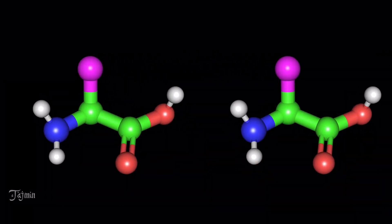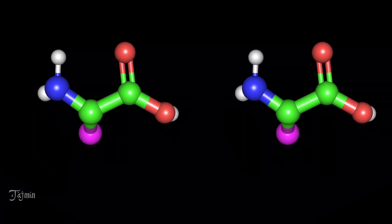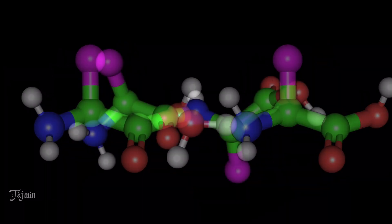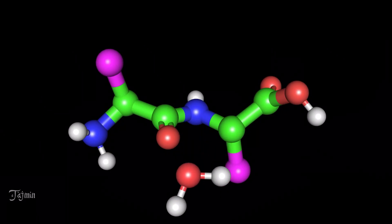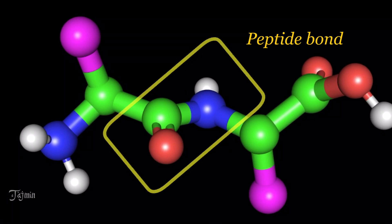The carboxyl group of one amino acid forms a strong covalent bond with the amino group of the second amino acid by leaving a water molecule. This bond is called as peptide bond.